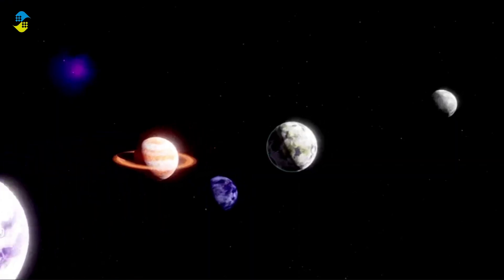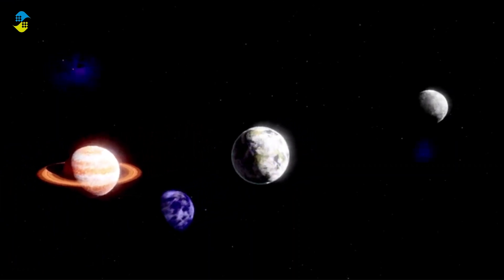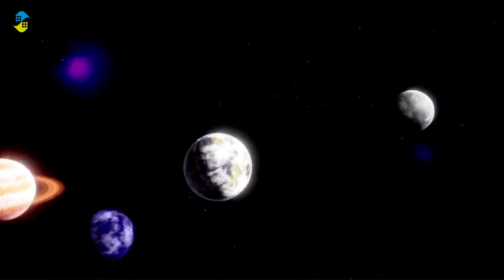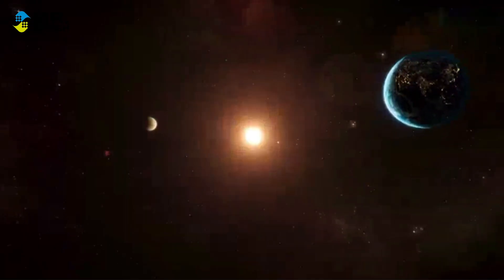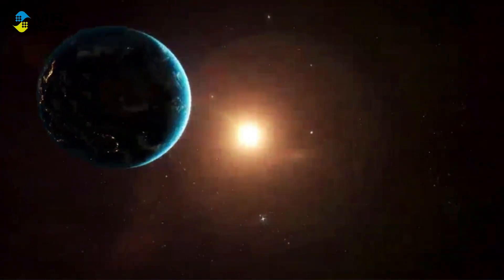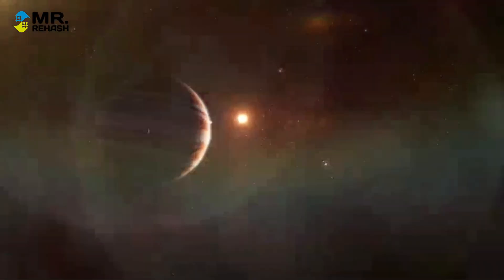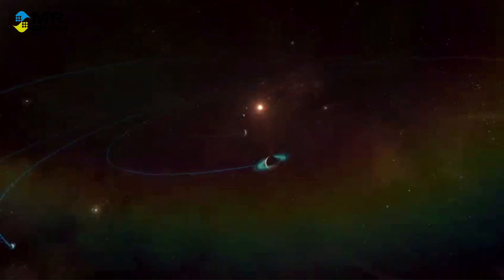The reason other planets are not as visible as stars lies in their distance from Earth and their orbital characteristics. The farther a planet is from Earth, the dimmer it appears. Additionally, the position of a planet in its orbit affects its visibility.